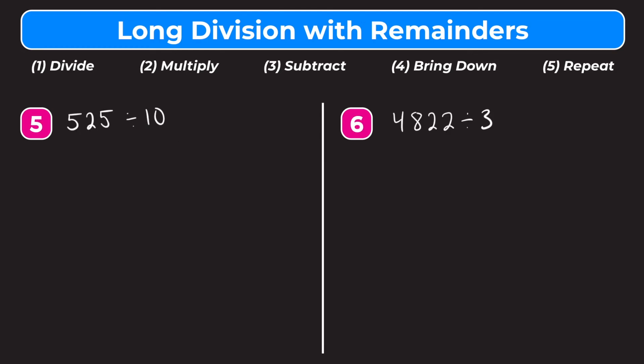For these last two examples, if you're feeling confident and want to try them on your own, feel free to pause the video here and follow along with me as I go through the solution later. If you just want to follow along with me the first time, that's okay as well. For number 5, we have 525 divided by 10. Let's rewrite this as a long division problem: 525 under the bar and 10 on the outside.